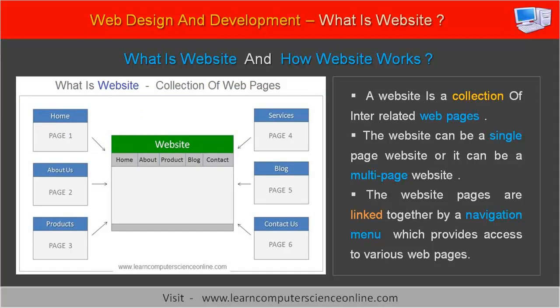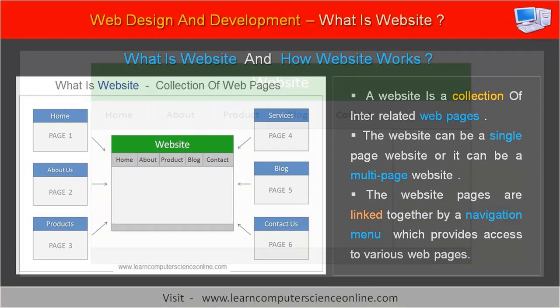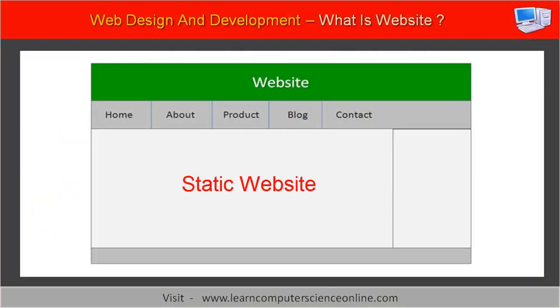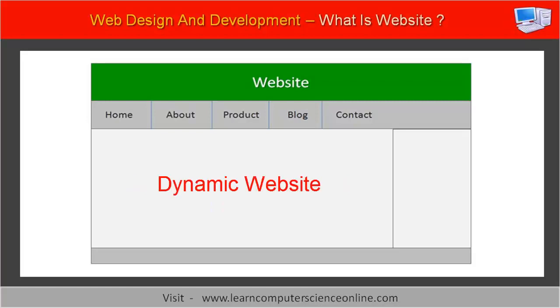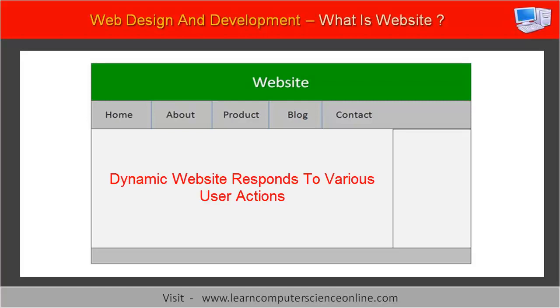A website can be either a single page website or it can be a multi-page website. A website can be either static or dynamic. A website is said to be a static website when it contains only static content. However, when a website responds to various user actions, then the website is said to be a dynamic website.